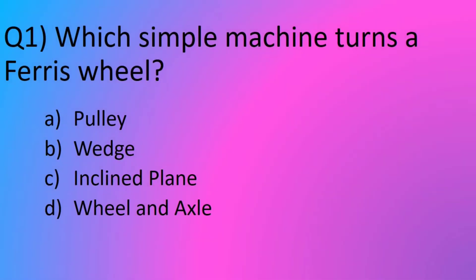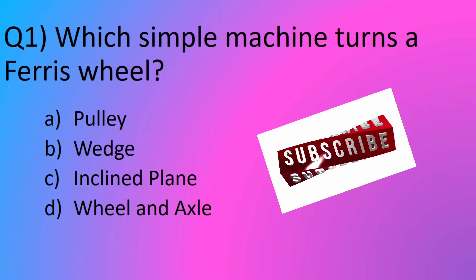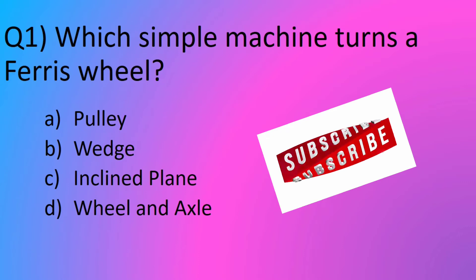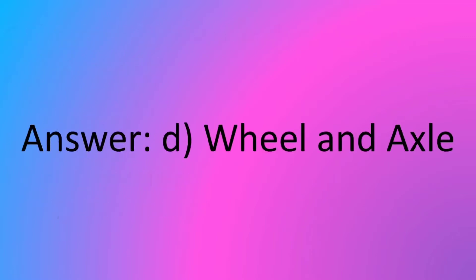Question number 1. Which simple machine turns a ferris wheel? Option A, pulley. Option B, wedge. Option C, inclined plane. Option D, wheel and axle. The answer is option D, wheel and axle.